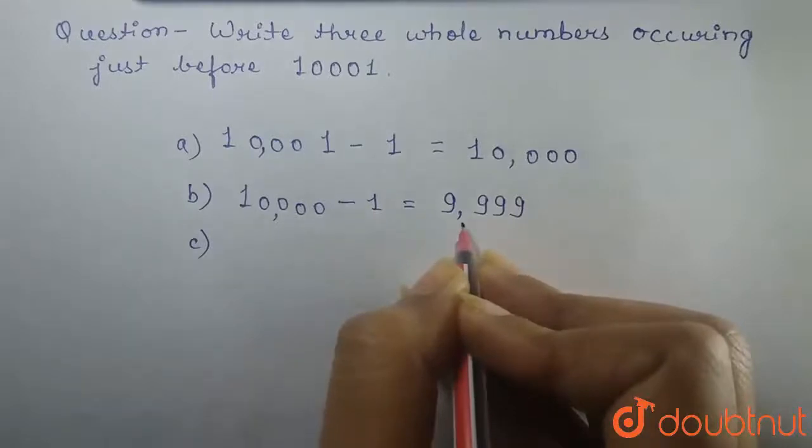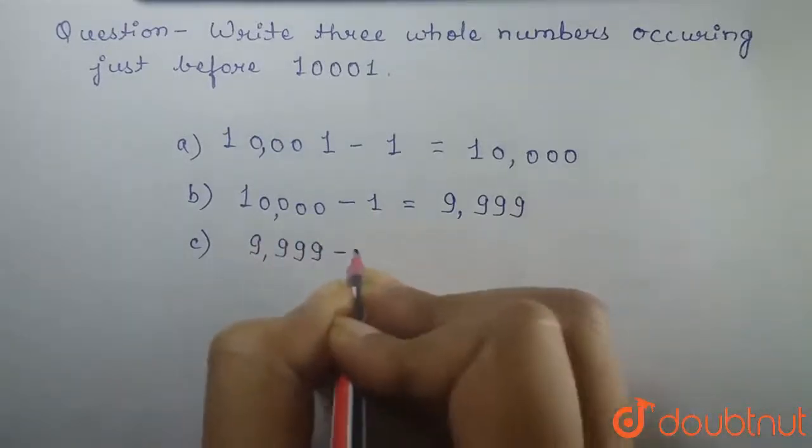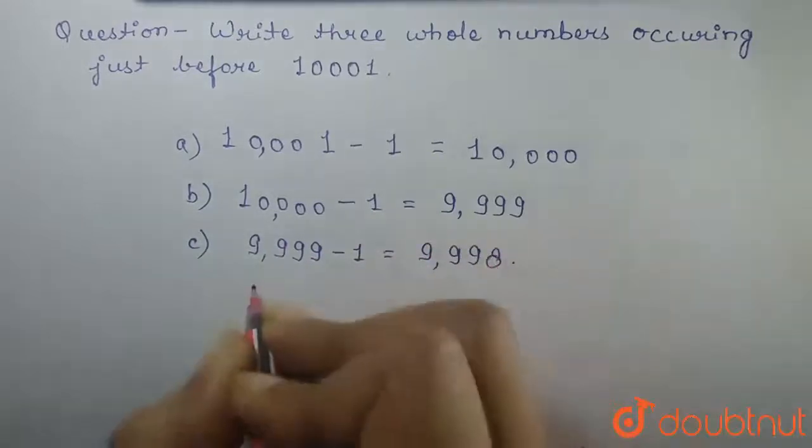Similarly, we can find the whole number just before 9,999 by subtracting one from 9,999, which gives us 9,998.